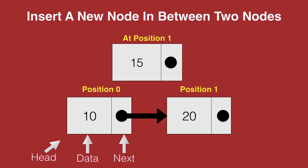The first thing we need to identify is the position at which our new node is to be inserted. We see here that the new node is to be inserted at position 1. So we first need to traverse the list till we reach position 1.